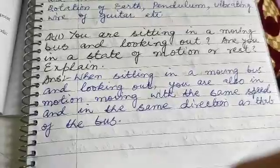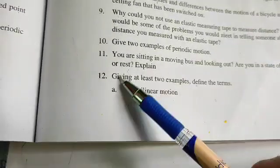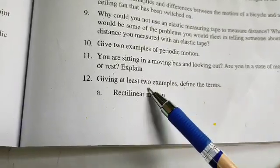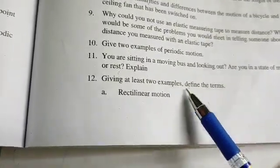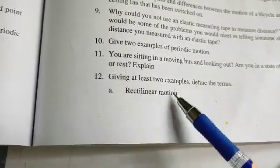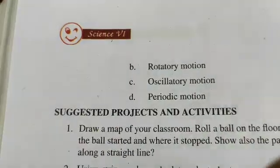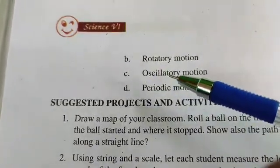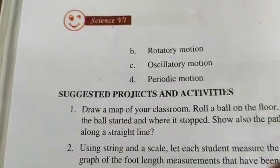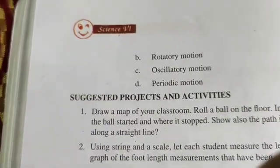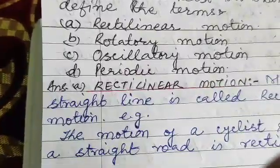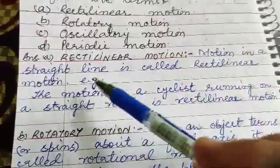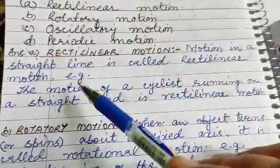Question number 12: Give at least two examples and define the terms: rectilinear motion, rotatory motion, oscillatory motion, and periodic motion. Rectilinear motion: motion in a straight line is called rectilinear motion.